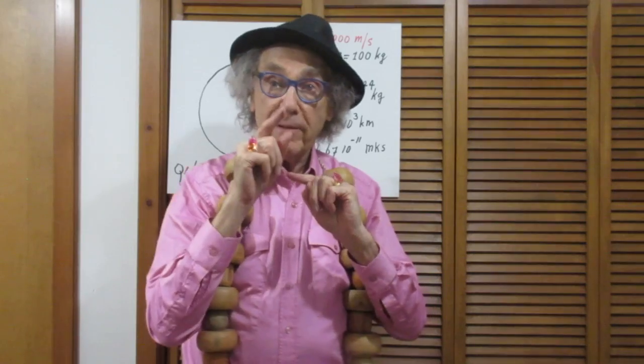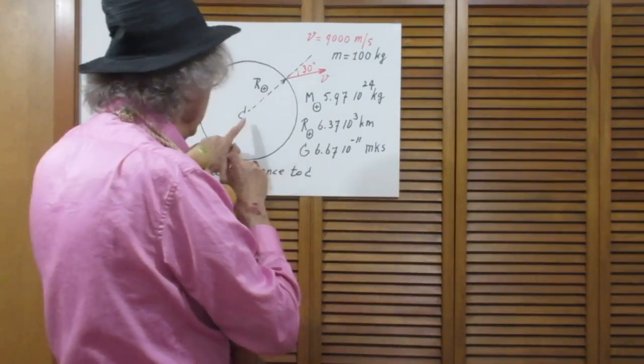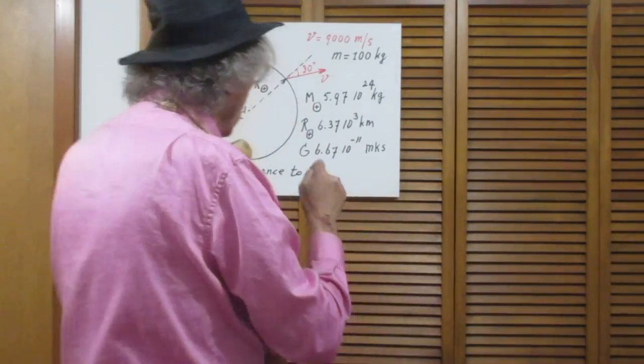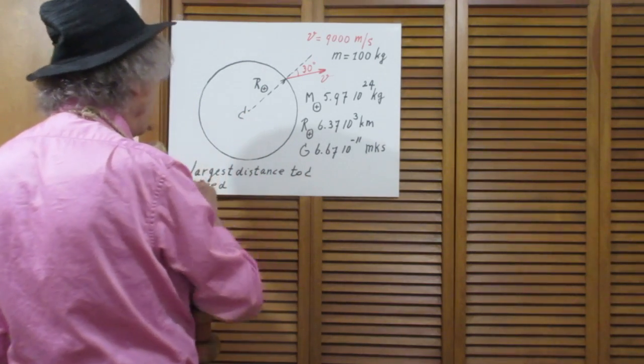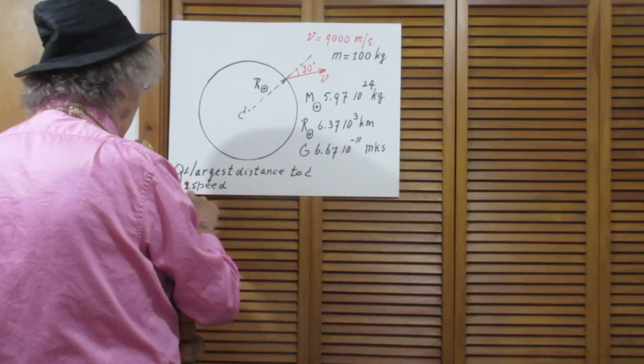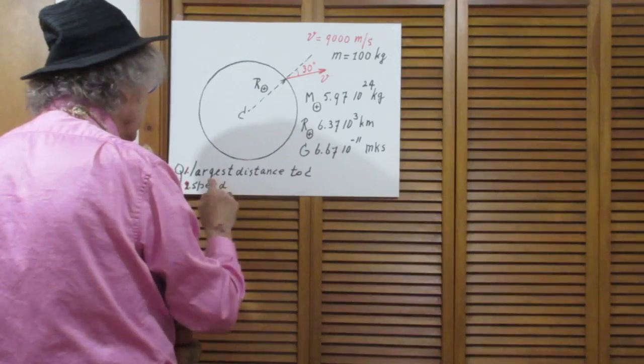And now come the two questions. What is the largest distance between that mass m and the center of the earth? And when it reaches that maximum distance, what will then be its speed? Question 1: what is the largest distance to the center of mass? And when that happens, what is the speed?